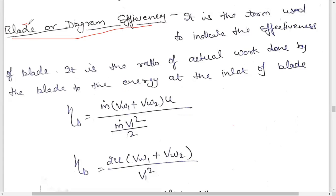We are talking about the energy of the moving blade. The energy of the moving blade is the output. And the input is in the form of kinetic energy, because we are talking about an impulse turbine. In an impulse turbine, the moving blades receive kinetic energy at the inlet, so the input is kinetic energy.